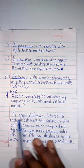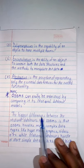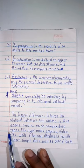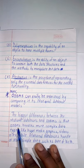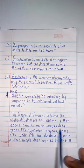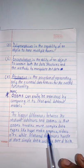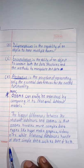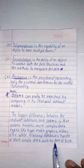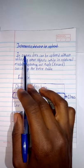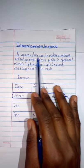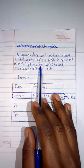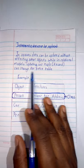The biggest difference between relational database models and object-oriented database models is that object-oriented database models handle more complex data types like hypermedia, graphics, videos, etc., while relational databases handle simple data such as date of birth. In object-oriented database models, data can be updated without affecting other objects, while in relational database models, updating one tuple or record can change the entire table.